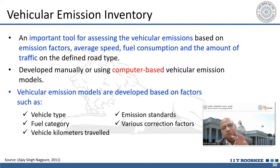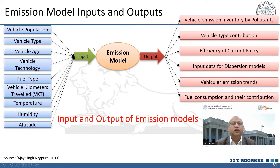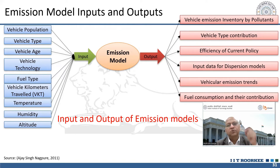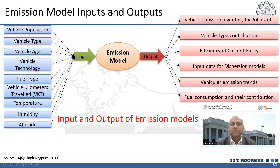For detailed activity data, we need vehicle type, fuel category, and how many kilometers are driven. Emission model input values include vehicle population by category in a city, vehicle type, vehicle age, engine technology (two-stroke or four-stroke), fuel type, vehicle kilometer travel, and correction factors for temperature, humidity, and altitude. The same vehicle running in Delhi versus a high-altitude location like Mussoorie will have different emissions. Output values include vehicle emission inventory by pollutant, vehicle type contribution, and efficiency of current policies.